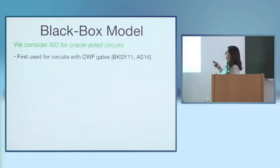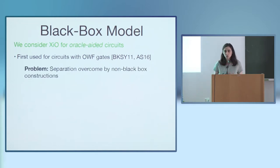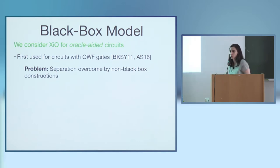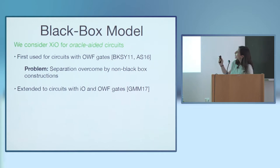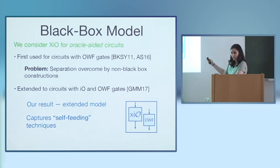This model of oracle-aided circuits was first used for circuits with only one-way function gates. But the problem is that there are many new constructions that overcome this model — for example, if you want to obfuscate a circuit that itself obfuscates circuits, or if you want to use functional encryption to generate a key for a circuit that encrypts, you can't do it with only allowing circuits that have one-way function gates. So this was extended in the so-called monolithic model of Garg et al., to circuits that have both IO and one-way function gates. This is the model that we work in.